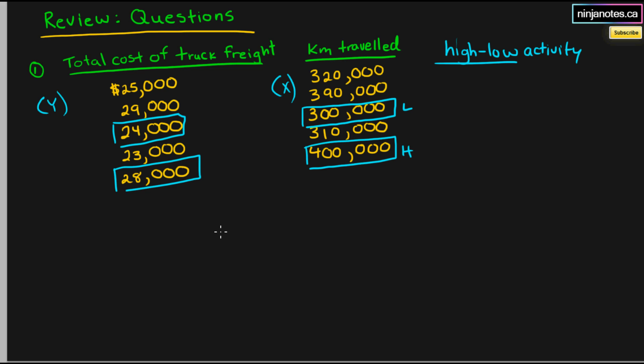So now we're going to have to work out a cost function, which is y is equal to vx plus f, y is total cost, v is variable cost, x is our cost driver, and f is our total fixed cost.